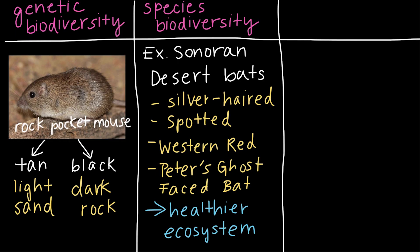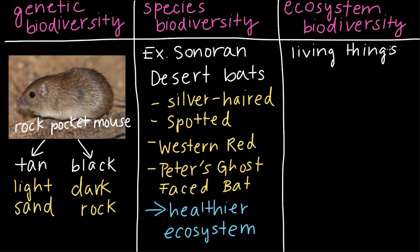So moving on to the final level, we have ecosystem biodiversity, and this is just the variety of ecosystems on the planet. Now, we've been talking a lot about the Sonoran Desert, and a desert is actually a type of ecosystem on Earth. And if you recall, ecosystems are made up of both living things and their physical environment. So in this case, living things in the desert ecosystem could include things like rattlesnakes, scorpions, and cacti, while non-living things could include rock formations or sand dunes.